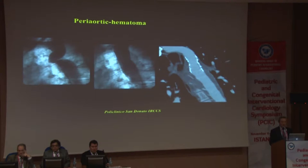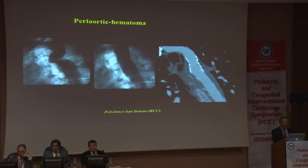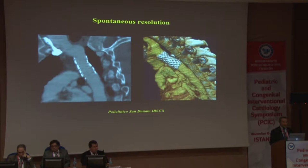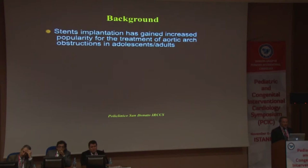This is the angiogram of a coarctation — rather severe with kinking. The immediate stent implantation result looks nice, but on CT there is a shadow around the aorta, representing a peri-aortic hematoma — actually a nearly ruptured aorta. We treated this patient conservatively, not doing anything, just waiting and controlling the pressure, and we had spontaneous resolution of this hematoma.